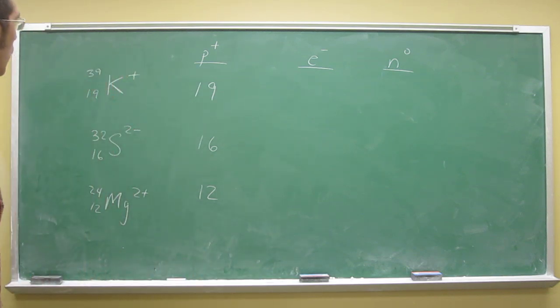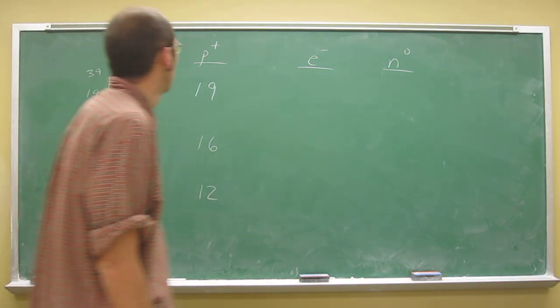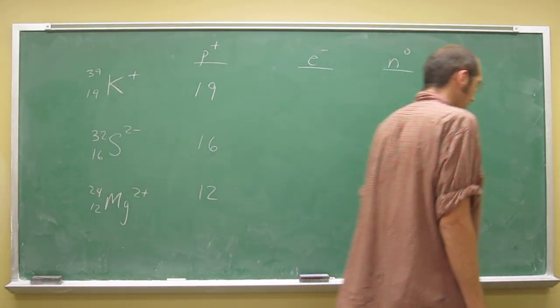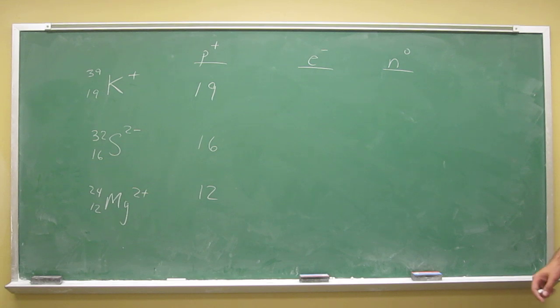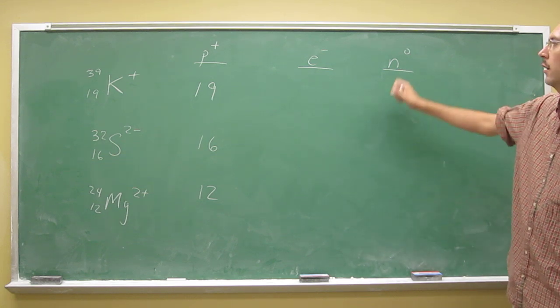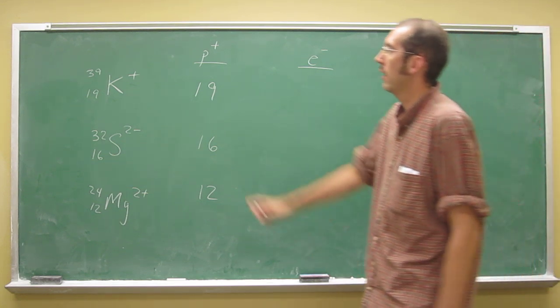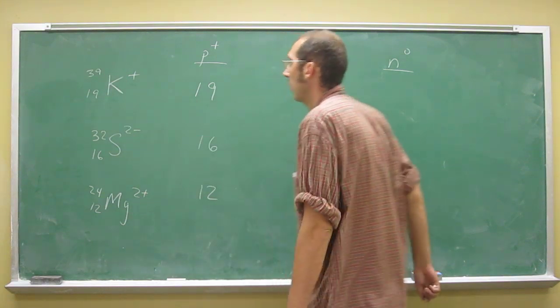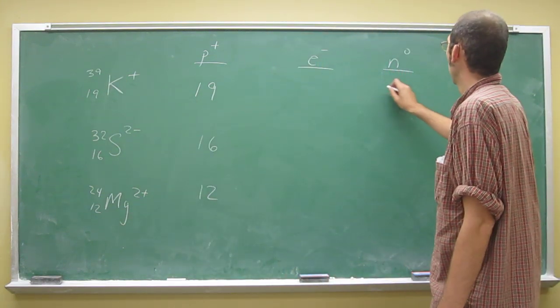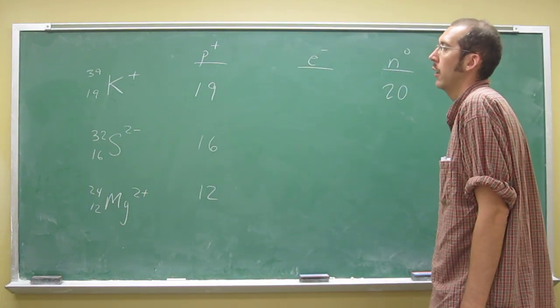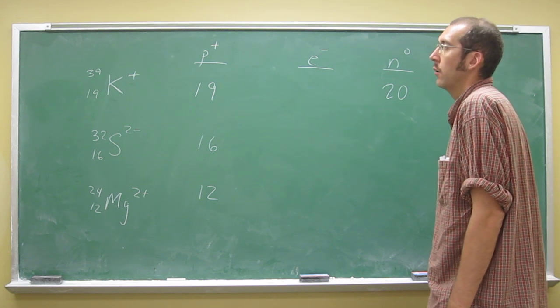So the electrons don't account for any of the mass of the atom as far as the mass number is concerned. What we do is we say the number of neutrons is the mass number minus the atomic number. In this case, it's going to be 39 minus 19, which is 20.